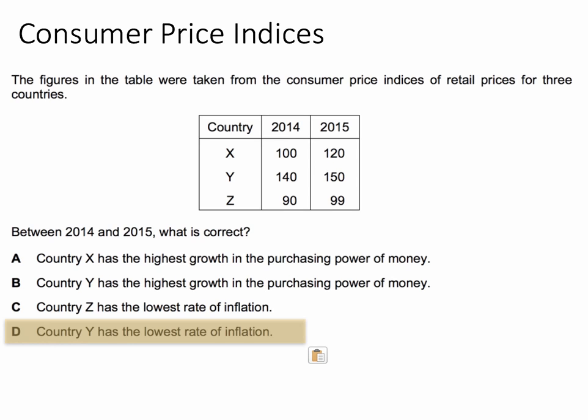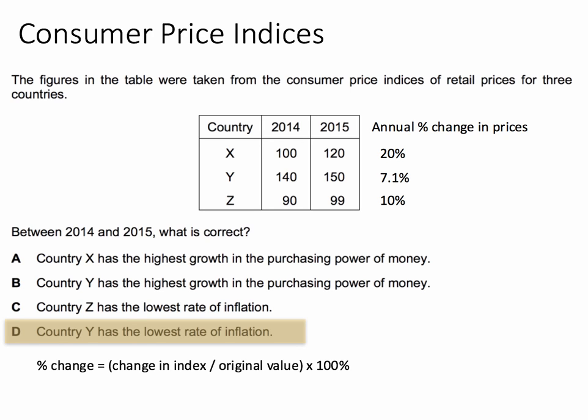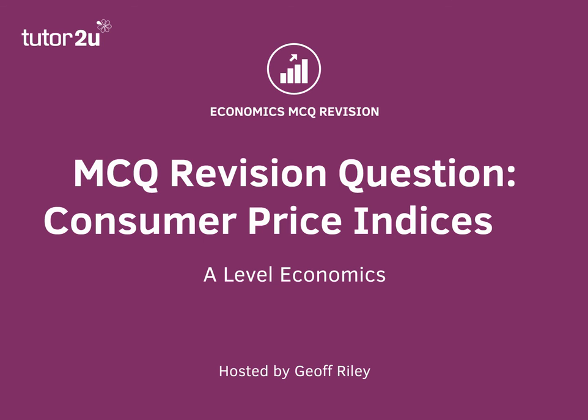We need to calculate percentage changes. Country X prices were 20% higher in 2015, country Y was 7.1% — calculated as 10 divided by 140 multiplied by 100 — and country Z saw a 10% increase in prices. So country Y, with inflation of 7.1%, has the lowest rate of inflation, and that's why D is the correct answer.